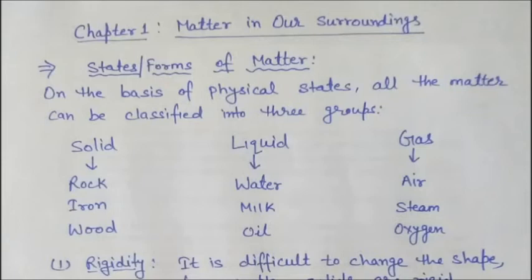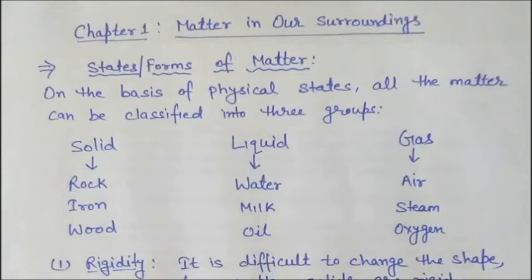Today we will discuss further. The first topic is states, or you can say forms, of matter. On the basis of physical states, all matter can be classified into three groups: solids, liquids, and gases. Solid examples are rock, iron, wood, ice, and sand. Liquid examples are water, milk, oil, petrol, and alcohol. Gases include air, steam, and oxygen. Matter exists in these three physical states.